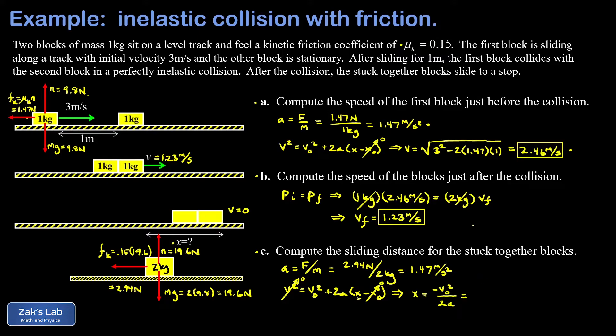And the initial speed, well, that's the speed after the collision occurs. That's 1.23. And I need to square that. And remember that A takes a minus sign because it points to the left. And this is good because the minus signs cancel and I get a positive value for X. In other words, the blocks end up to the right of where they began. And our sliding distance to three significant figures is 0.515 meters.